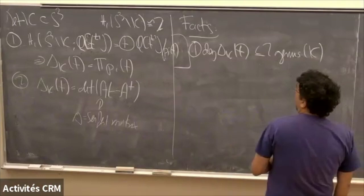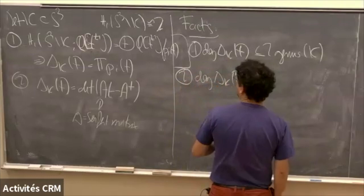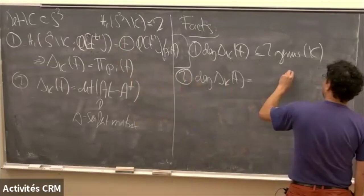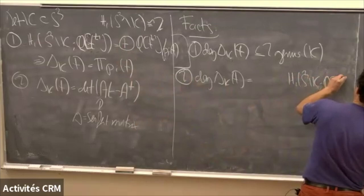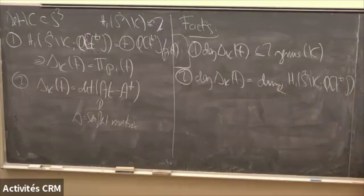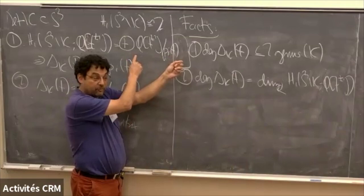Another way to formulate this: if we look at the first definition, H₁ of S³ minus K over ℚ[t, t⁻¹], this is a rational vector space and its dimension is exactly the degree of the Alexander polynomial. So the degree of the Alexander polynomial equals the rational dimension of that module.